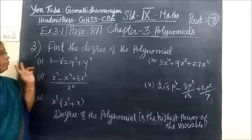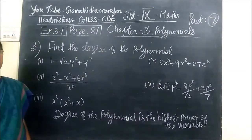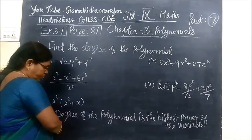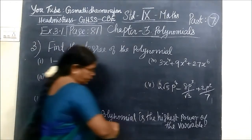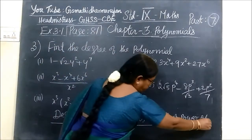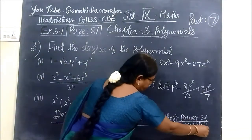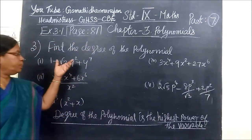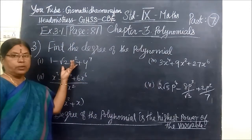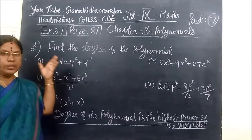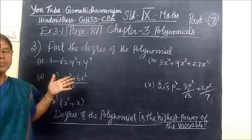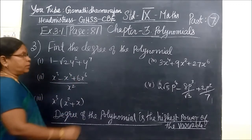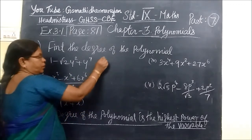Now find the degree of the polynomial. The degree of the polynomial is the highest power of the variable. You are given an expression, you are given a polynomial — you see which is the highest power of the variable. That is the degree of the polynomial.